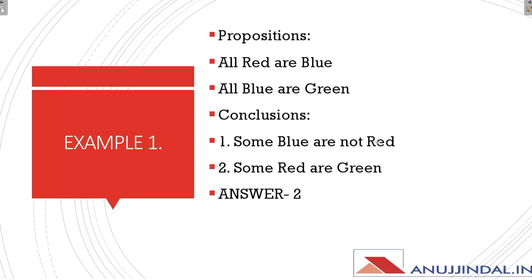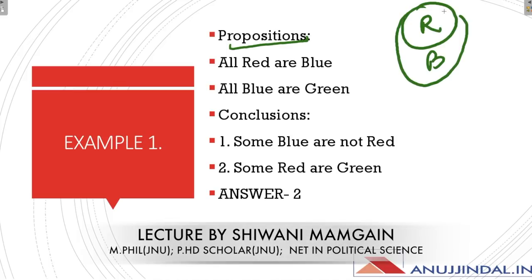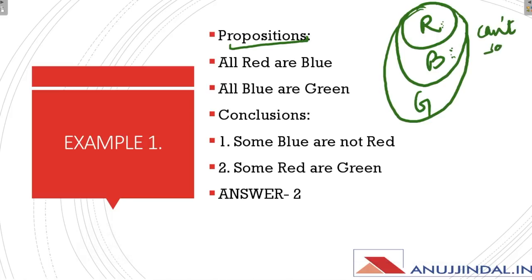Now let's start with the examples. First example: propositions are — 'All red are blue' and 'All blue are green'. Conclusion 1: 'Some blue are not red' — यहाँ पर हमें नहीं पता कि कितना है कितना नहीं, so we can't say — हम यह tick नहीं कर सकते। Conclusion 2: 'Some red are green' — कुछ red जो है वो green है। यह बिलकुल सही है क्योंकि जो red part है वो green के अंदर है। So the second conclusion is correct.